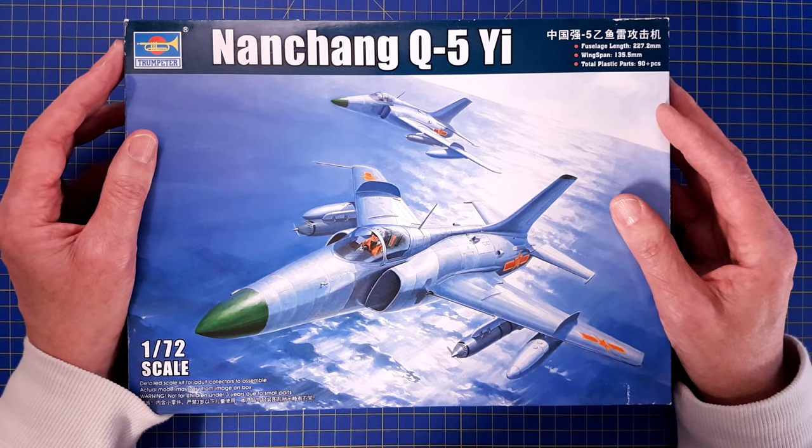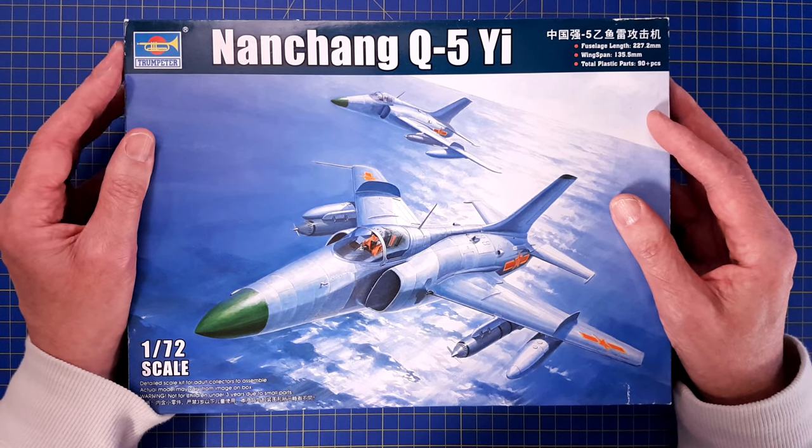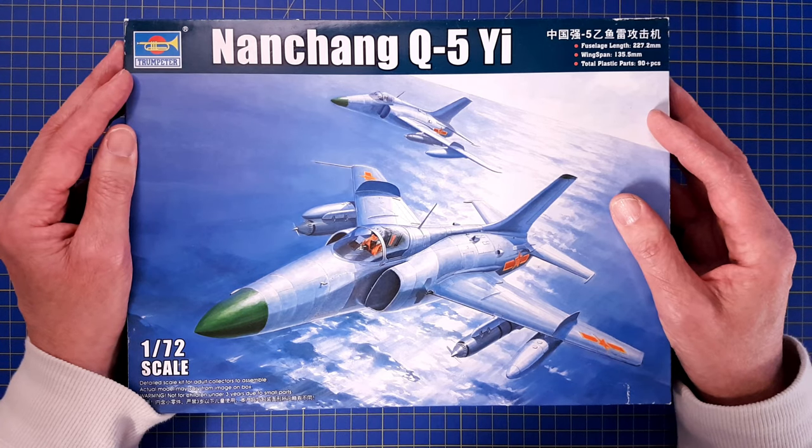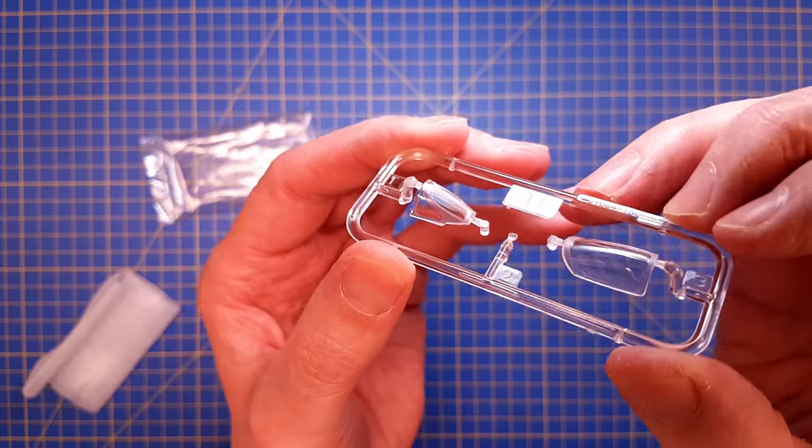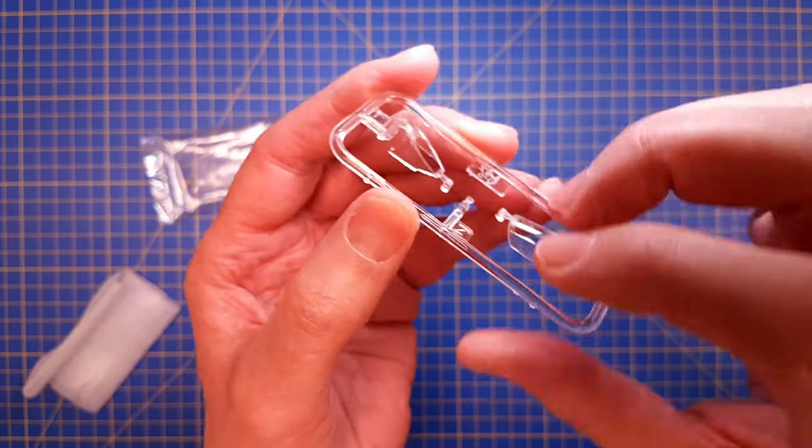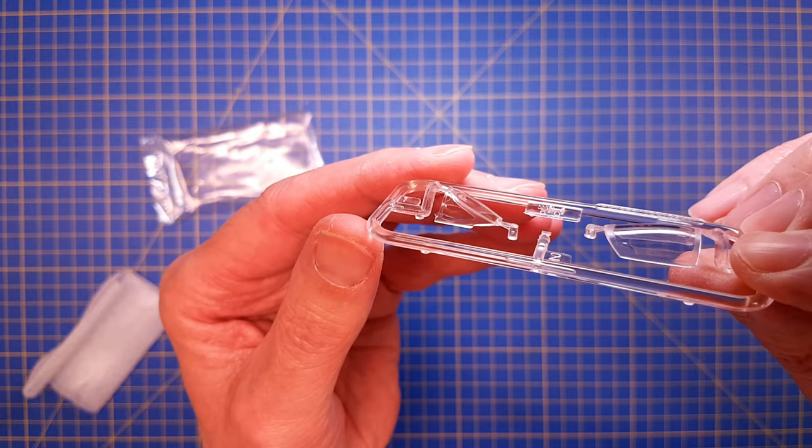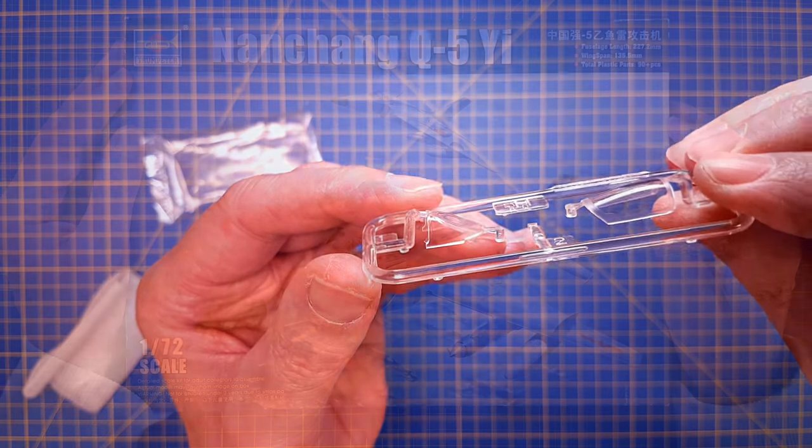My only concern build-wise is the centerline seam on the fuselage, since the dorsal spine features a lot of intricate details. They might be difficult to preserve if you need to fill and sand that part of the model.